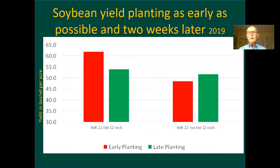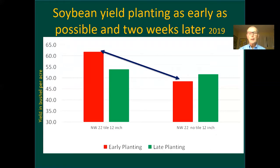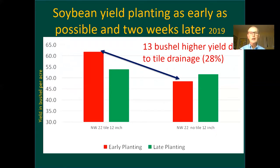Not only is management important as far as varieties or other applications of fertilizer, fungicide, etc., but one of the dominant aspects is the timing of planting. Typically with tile we have the opportunity to plant in a very timely fashion. In this graph I'm showing tile drainage and early planting. The red bars represent early planting — on the right is no tile versus the left which is tile. The difference between early planting with no tile versus early planting with tile is about 28% in 2019. However, if you look at the green bars, planting late did not make a big difference whether there was tile or no tile.